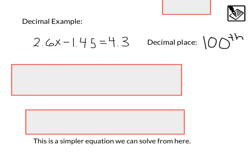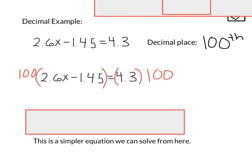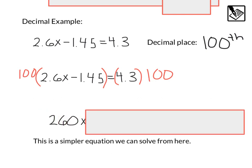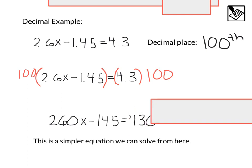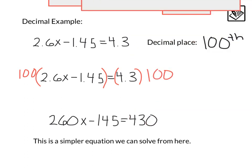And the reason we did that, because we can actually multiply both sides of the equation by 100. And we can see when we distribute that in, 100 times that 2.6x, that's going to leave us with 260, because 100 times 2.6 is now 260. 100 times that 1.45, that's going to give us 145. Then we have equals 4.3 times 100, that's going to give us 430.